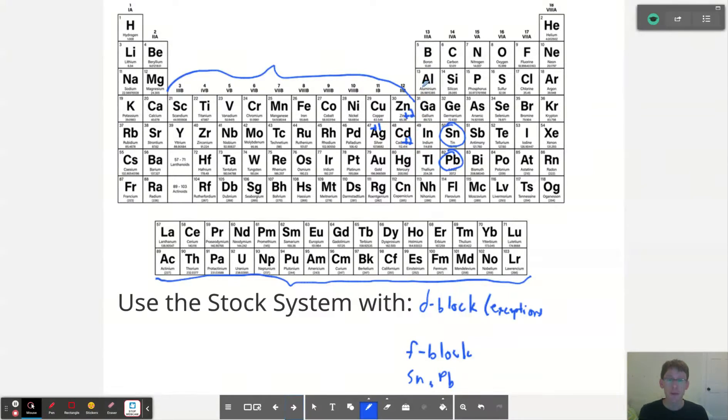Now, how do you remember this? I think we can make a line from aluminum, which you know is plus three because it's in group three. So aluminum, gallium, indium, they're all plus three. So aluminum being plus three, we go to the left and down one.